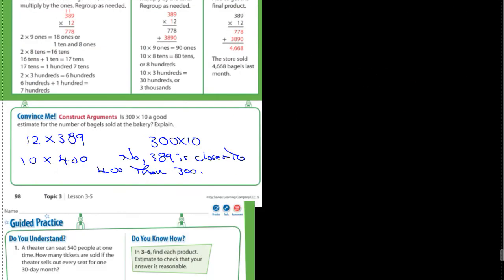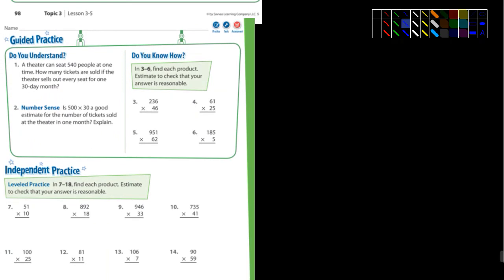All right. So let's drop down to the guided practice and I'm just going to do a couple of these here. Let me see. Number one, a theater can seat 400 and, yeah, I'm sorry, 540 people at one time. How many tickets are sold if the theater sells out every seat for 130 day month? So let's take a look at that. I'm looking at number one right now.